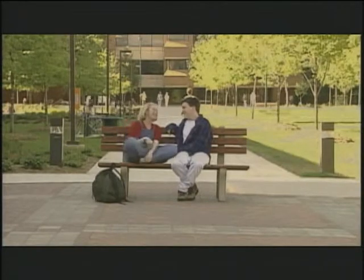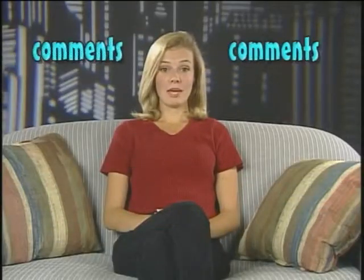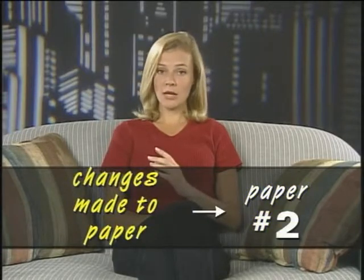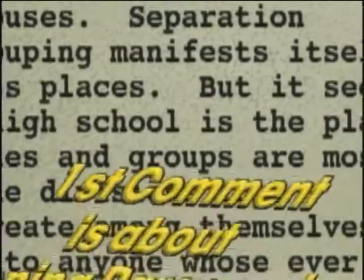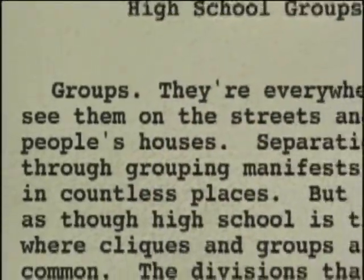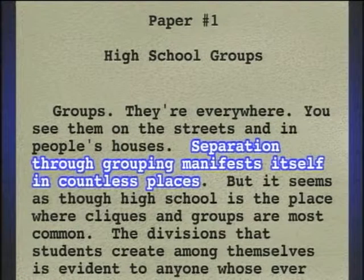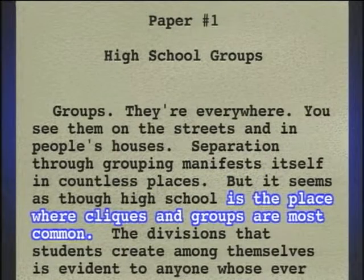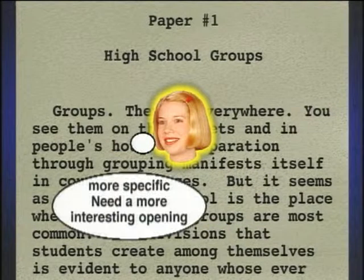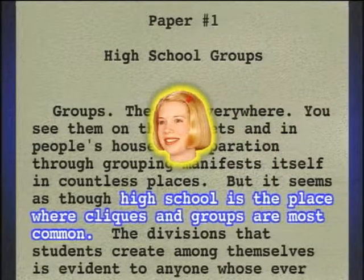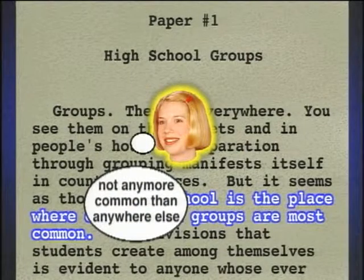Nathan takes his paper and his list of questions to Sam in his class. Let's look at some of the comments Sam had about Nathan's paper. Remember, the paper she has commented on is paper number one of your insert cards. Changes made to this paper will be in paper number two. Her first comment is about the opening paragraph. Sam has marked that the opening could be more specific and interesting, and that the introduction could be spiced up more. She also questions his statement that high school is the place where cliques and groups are most common, thinking groups outside of high school are just as common.